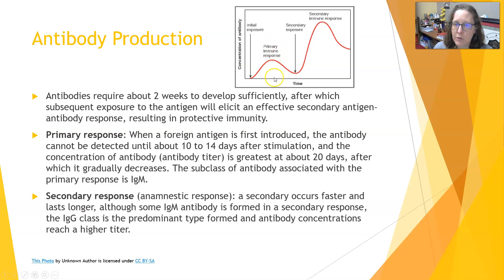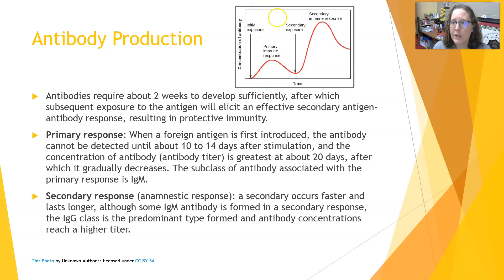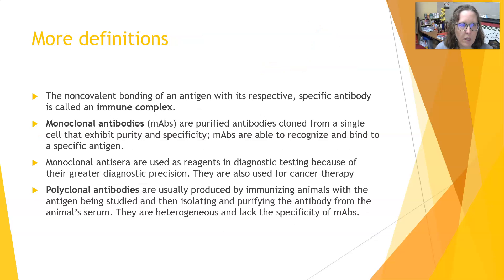Vaccines trigger this primary immune response in hopes that if you are exposed to the pathogen in real life, you just get this secondary immune response and never develop symptoms. This can also be the reason behind booster shots — they are trying to trigger that secondary immune response to make sure everything is still functioning, the immune system still remembers, and still has cells that can produce those antibodies.